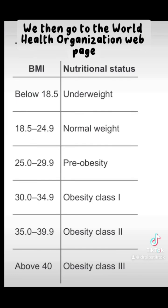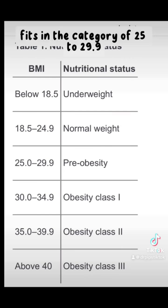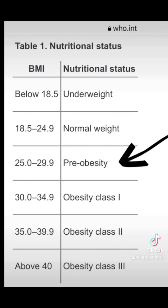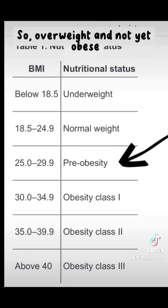If we then go to the World Health Organisation webpage, we can see that a BMI of 27.7 fits in the category of 25 to 29.9. This person would be deemed to be pre-obesity, so overweight and not yet obese.